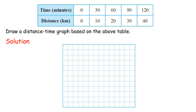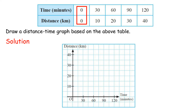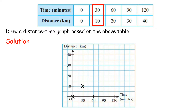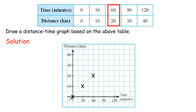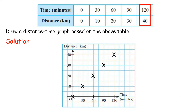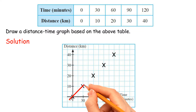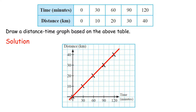Solution: Choose suitable scales to represent the given distance and time. Plot a point that represents each pair of values of distance and time on a grid paper or graph paper. Join the points plotted using a ruler to obtain the distance-time graph.